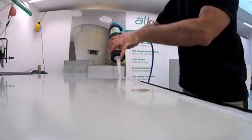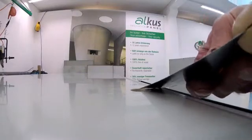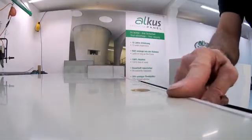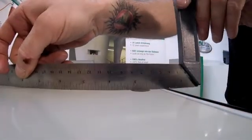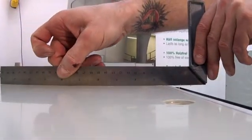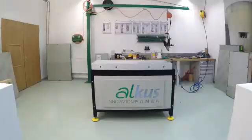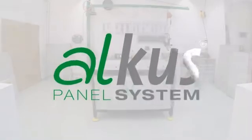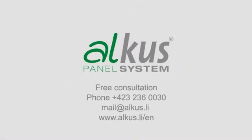The gap between the formwork and the panel can but doesn't have to be filled with silicone. Since the Alcus panel neither swells nor shrinks, it's installed flush into the formwork. This guarantees a perfect joint pattern.